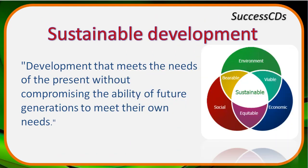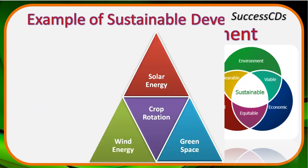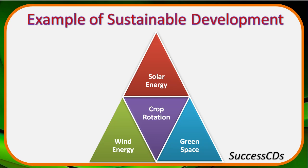To overcome all these problems, we must focus on sustainable development. Sustainable development fulfills the needs of today's generation without compromising the ecological balance of nature and without exhausting resources for future generations. When we achieve an equilibrium of economic growth with social stability and environmental conservation, we get sustainable development. Examples include using solar energy, wind energy, crop rotation — rotating different crops systematically in the same farm so the land doesn't become deficient — and green spaces like amusement parks that also support economic growth.